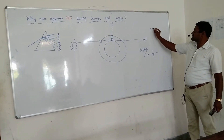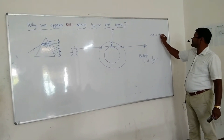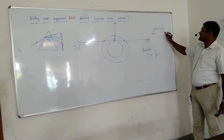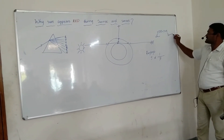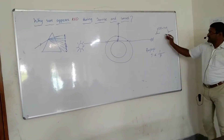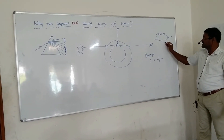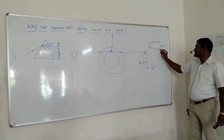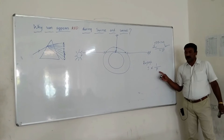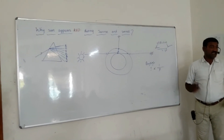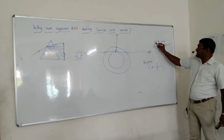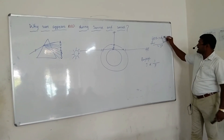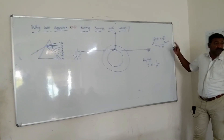Looking at the seven colors — violet, indigo, blue, green, yellow, orange, red — the violet wavelength is about 400 nanometers and the red wavelength is about 700 nanometers. So from violet to red, the wavelength is increasing. As wavelength increases, the intensity of scattering decreases. So violet has maximum scattering, and red has least scattering.